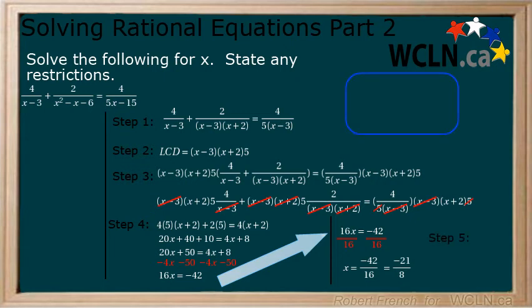Step 5: State any restrictions. We have x minus 3 and x plus 2 as factors in the denominator. Solve each for x to get x cannot equal 3 or negative 2. The final answer is x equals negative 21 over 8, where x cannot equal 3 or negative 2.